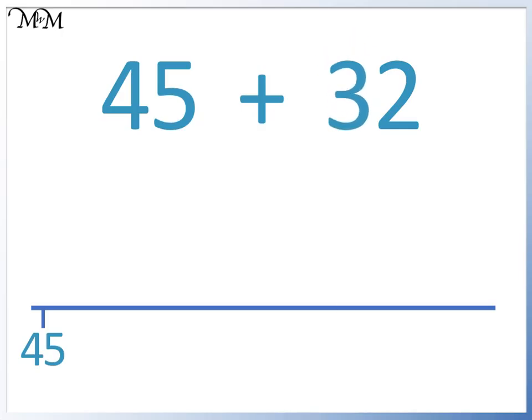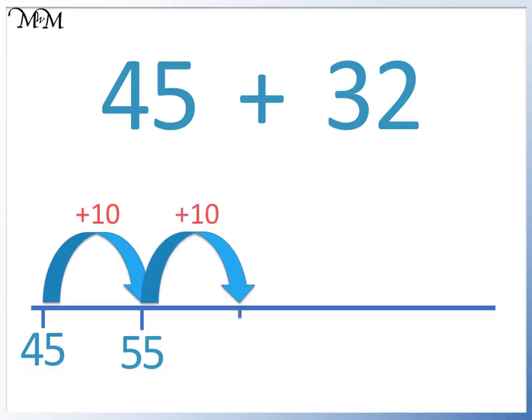We will make 3 jumps of 10. We jump once to go from 45 to 55. We jump twice to go from 55 to 65. And jump a third time to go from 65 to 75.